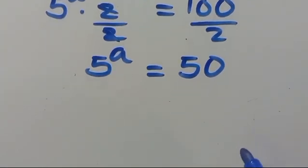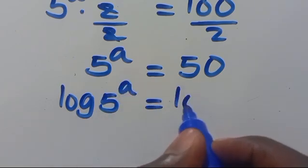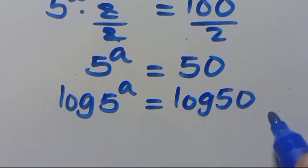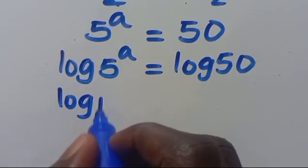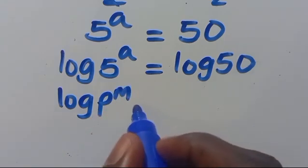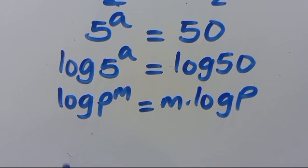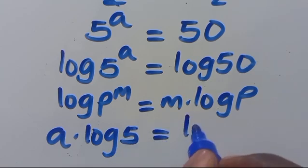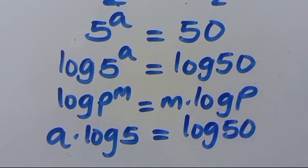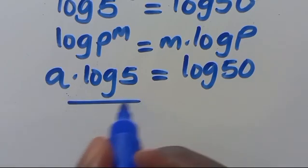From here, let's apply log to both sides. So we have log of 5 to the power of a equals log 50. Using the rule log p to the power of n equals n times log p, this becomes a times log 5 equals log 50.